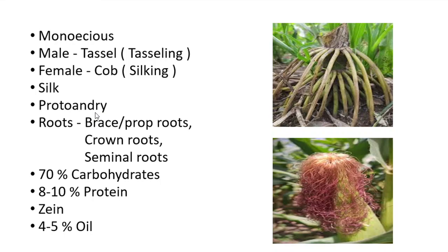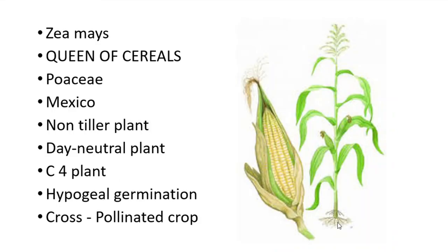There are three types of roots in maize: brace or prop roots, crown roots, and seminal roots. Prop roots are present above the soil. Crown roots are the first thick roots below the soil. Seminal roots are present below the crown roots. Seminal roots nourish the seedlings of maize.